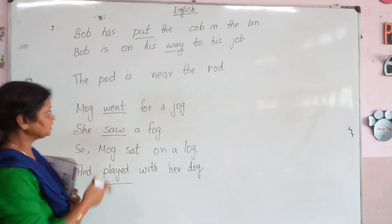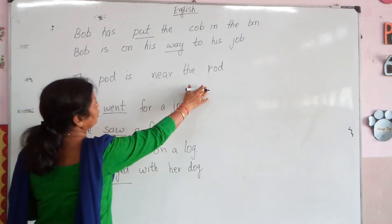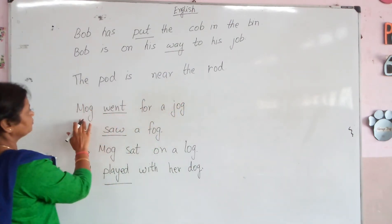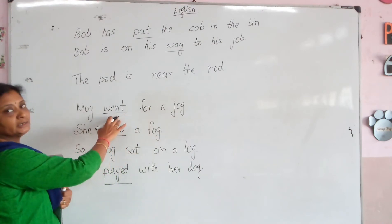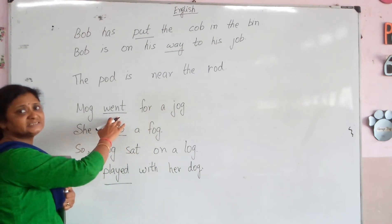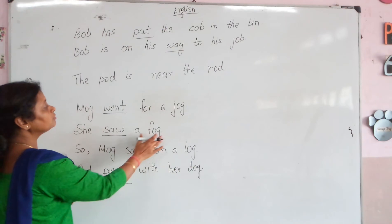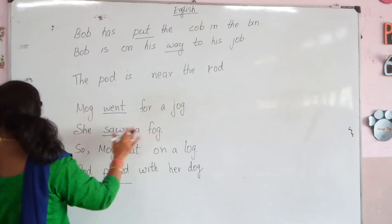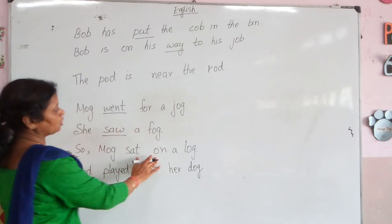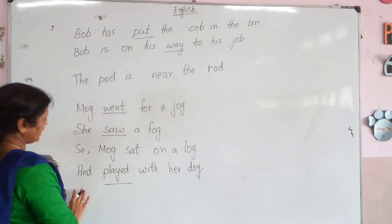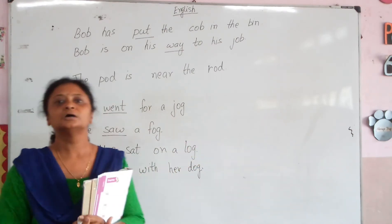So remember how to read this. The pod is near the log. Bob went for a job. W-E-N-T, went. She saw a fog. Bob sat on a log and played with her dog.